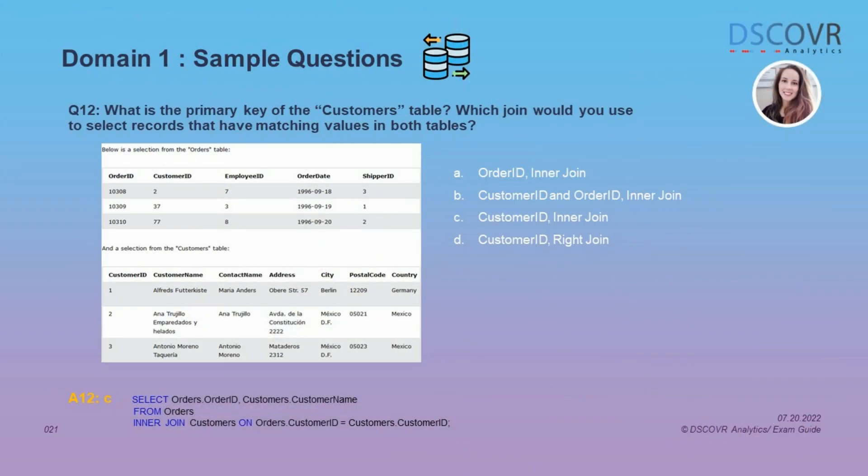This question is asking us for two different things. First, it's asking us to identify the primary key of the customers table, and then we're asked to identify the join type that will select matching records in both tables. The primary key is a unique identifier for each row in a table, so customer_id in this case is the primary key of the customers table, and an inner join will give you matching records in both tables.